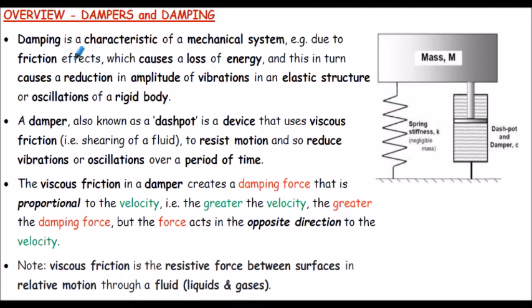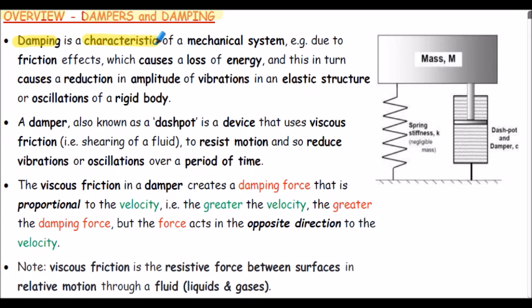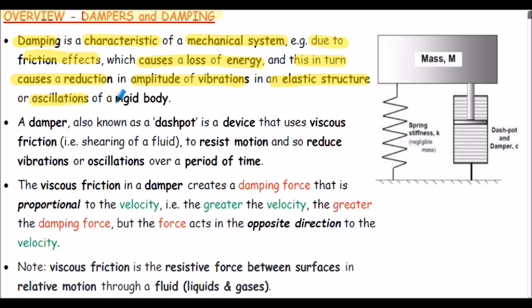Hello, and welcome to this very brief presentation related to an overview of dampers and damping. Damping is a characteristic of a mechanical system, often due to friction effects, which cause a loss of energy in the system. This, in turn, causes a reduction in the amplitude of the vibrations in an elastic system or of the oscillations of a rigid body.